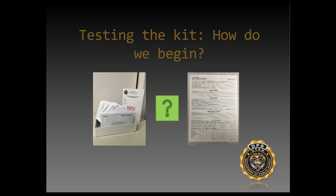When the kit comes to the lab, the first thing we do is read the kit report — a piece of paper filled out by the nurse. The nurse interviews the victim and tries to determine what happened to the best of the victim's recollection. We use that as a starting point to guide us in selecting the most relevant items for testing, helping us focus our effort and resources. As a forensic scientist, I go through and take a look at each item, inventory what was and wasn't collected, compare that to the report, and determine which samples to begin with.